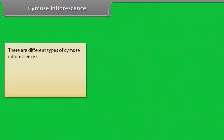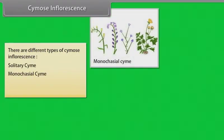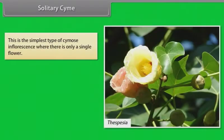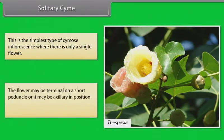There are different types of cymose inflorescence: solitary cyme, monocasial cyme, dicasial cyme, and polycasial cyme. Solitary cyme is the simplest type of cymose inflorescence where there is only one single flower. The flower may be terminal on a short peduncle or it may be axillary in position. Example: Thespesia.